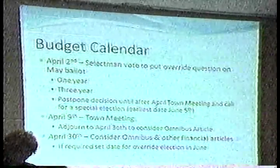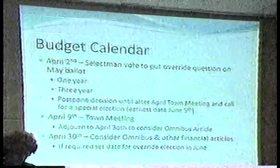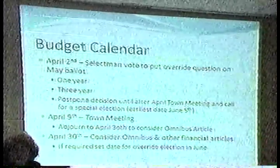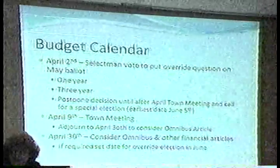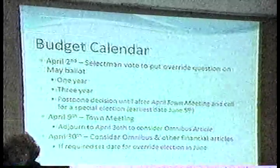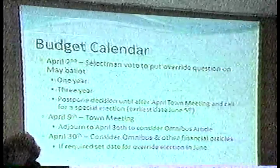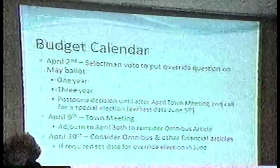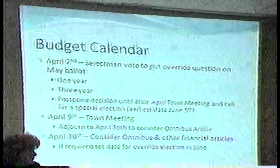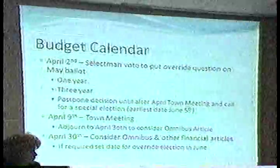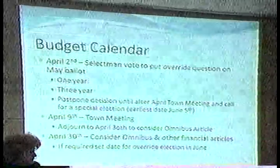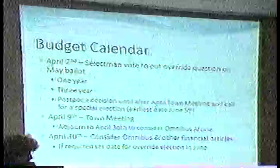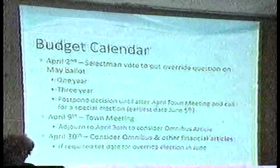On the May ballot, we would be putting a one-year or three-year override question, or postponing the decision until after April Town Meeting and calling a special election — the earliest would be June 5th. Town Meeting this year is scheduled for April 9th. It is the Board's intention to adjourn after finishing all non-financial articles to a date certain of April 30th to consider the omnibus article, because the legislature's house bill would have been voted on just a few days before April 30th, giving us a better picture of our state aid.